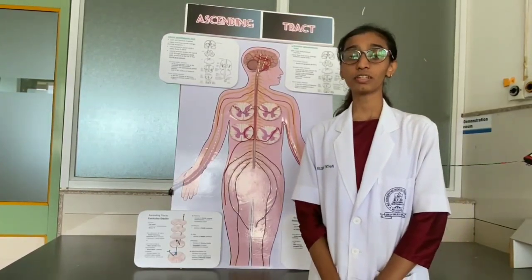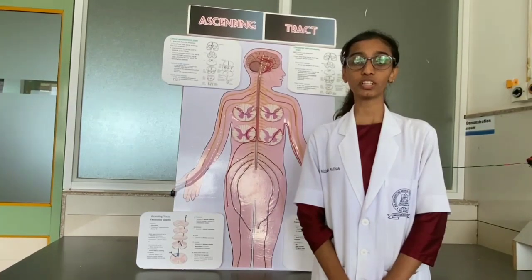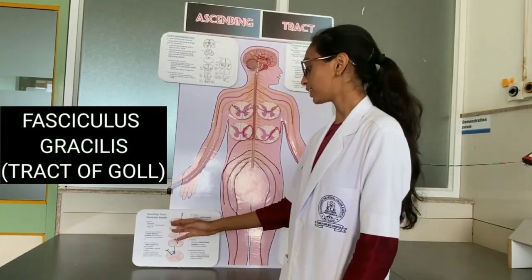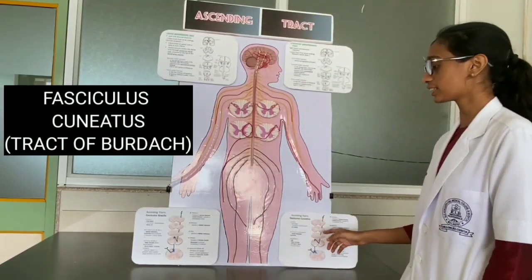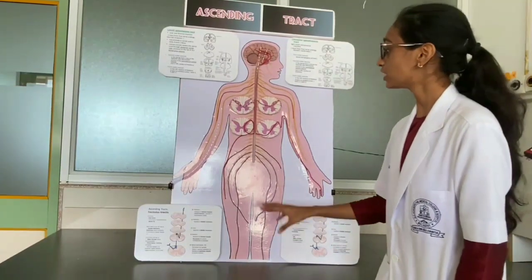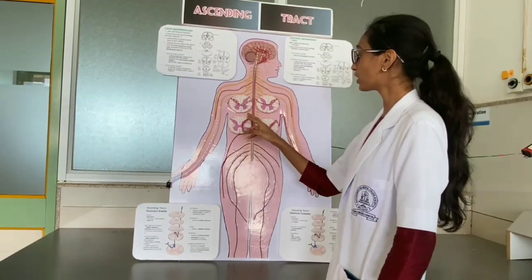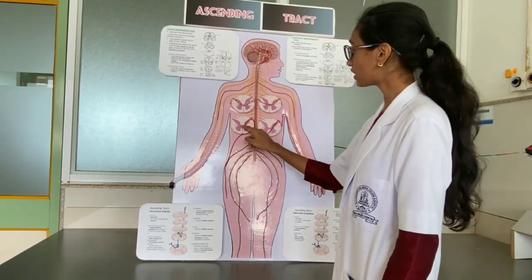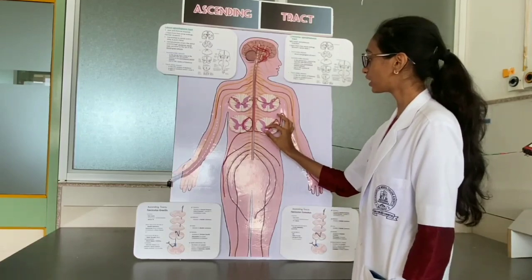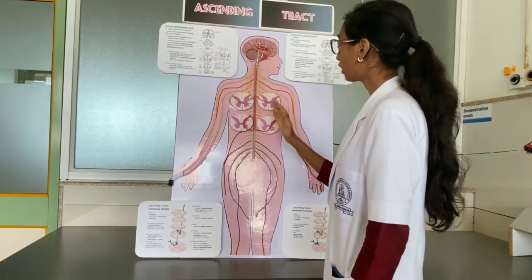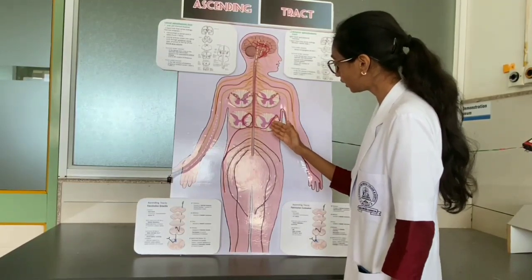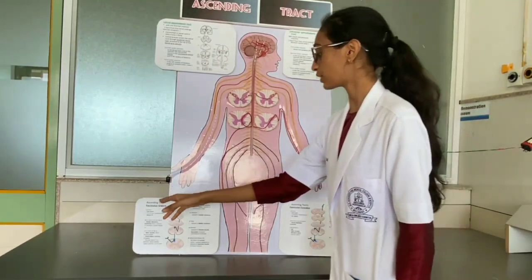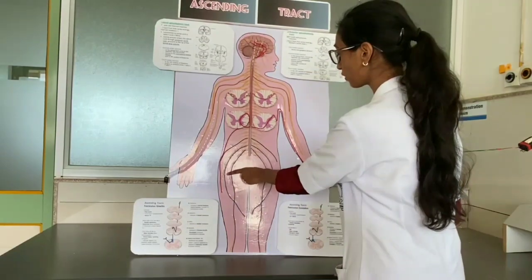Now I am going to explain about the major tract of the ascending tract, which is also known as the dorsal column or posterior column tract. There are two types: fasciculus gracilis of Goll and fasciculus cuneatus of Burdach. They are situated in the posterior white column. As you can see here in this cross section of the spinal cord, the middle portion is known as the white column, and the fibers of these two tracts are situated within it. After entering into the spinal cord, some fibers ascend and some fibers descend. The fasciculus gracilis carries fibers from the lower part of the body, while the fasciculus cuneatus contains fibers from the upper part of the body.